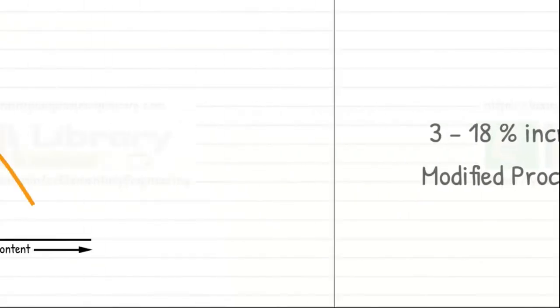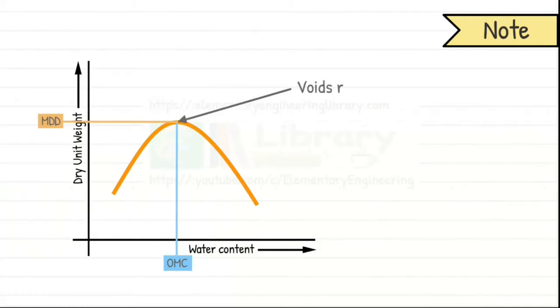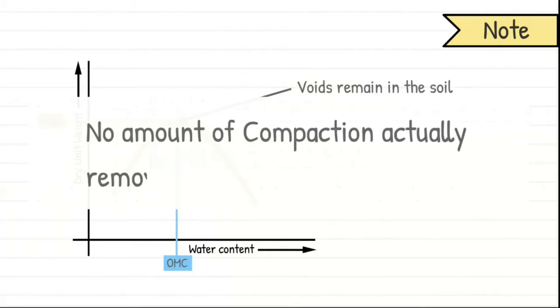In the curve, we can see that at optimum moisture content, soil has achieved maximum dry unit weight or maximum dry density. However, it is important to note that even at this water content, some voids remain within the soil. In fact, no amount of compaction actually removes all the air voids from the soil.